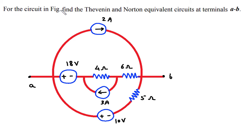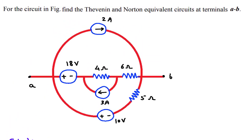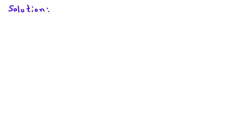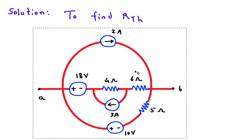For the circuit in this figure, we need to find the Thevenin and Norton equivalent circuits at terminals AB. To find the Thevenin equivalent, we need to find RTH and VTH. To find RTH, we will turn off all the independent sources.